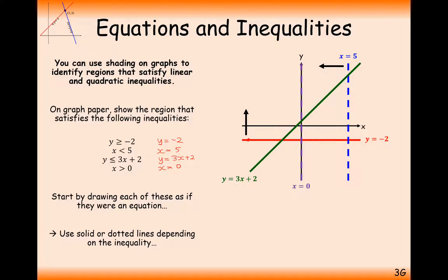We want the y-coordinates to be less than 3x plus 2, so we need a downward arrow below that line. And when x is bigger than 0, we want the right-hand side of the purple line. Finding all the intersections of these arrows gives us the shaded region.